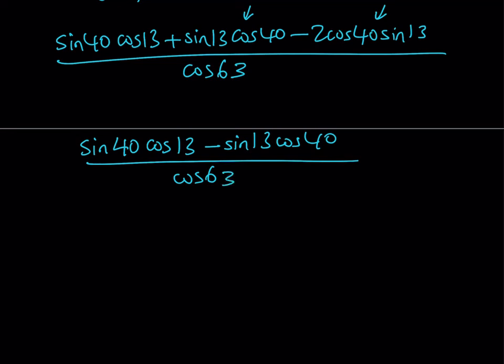Now once we simplify we do get a nice expression in the numerator. Because it is in the form sine alpha cosine beta minus sine beta cosine alpha. And this is nothing but sine alpha minus beta.